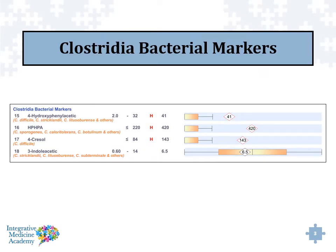One of the areas that's really important on the Organic Acid Test from Great Plains Lab is the section on Clostridia Bacterial Markers. This is an area that's often not analyzed thoroughly on other companies' OAT tests, and that's a big problem because there are four markers in this particular section. You'll commonly see things like HPHPA or 4-cresol elevated in various individuals, and if these get overlooked and not analyzed, you're going to miss a tremendous amount of clinical information for people with chronic fatigue, depression, anxiety, autistic individuals, people dealing with mental health challenges, or even neurological disorders.